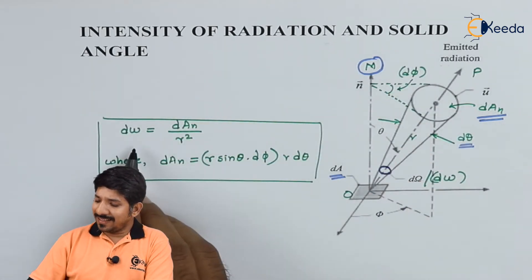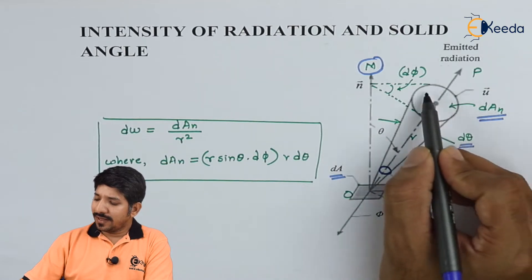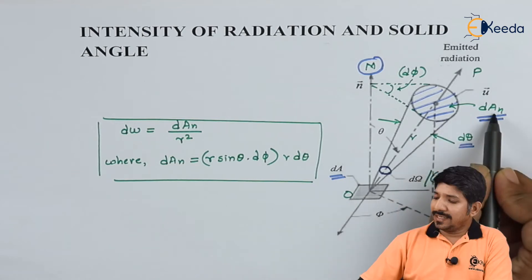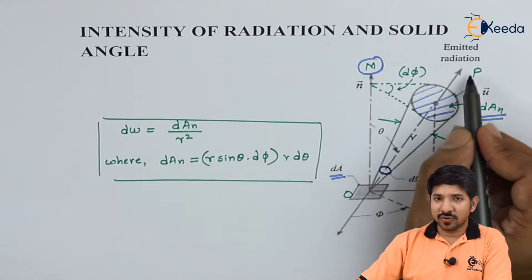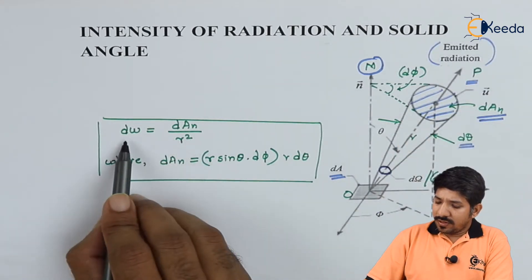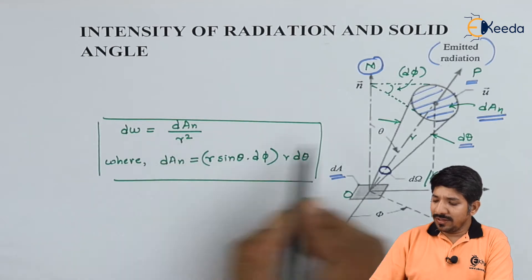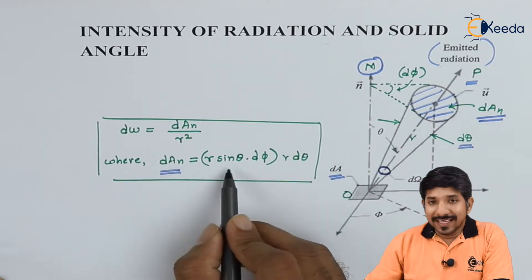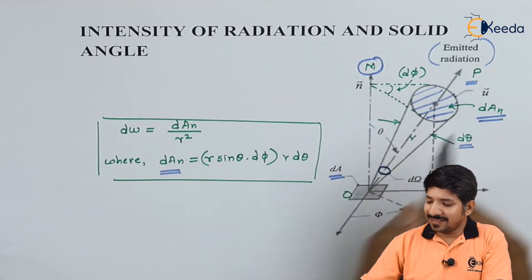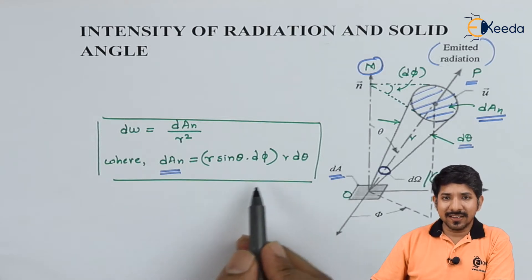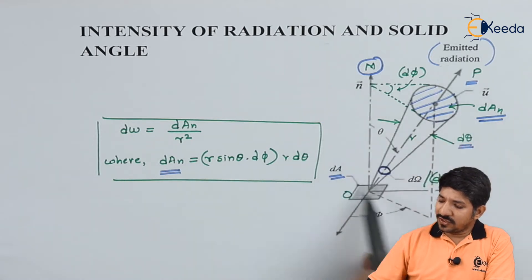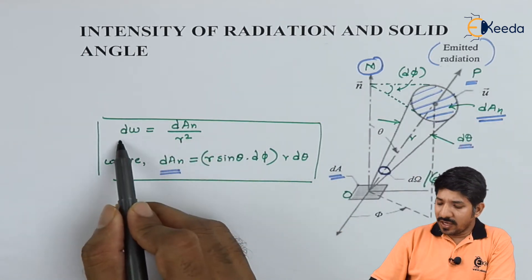In this case, the solid angle dΩ is nothing but the elemental area dAn — the normal area to the surface or to the direction p in which the radiation is emitted — divided by the distance squared, r². To find out how the area comes about geometrically, we would need a geometrical analysis which will be covered in another topic. For now, simply understand that with a given geometry, the solid angle can be found if the normal area is known.